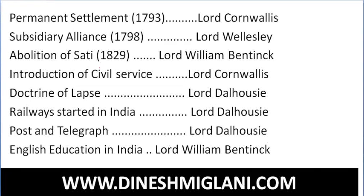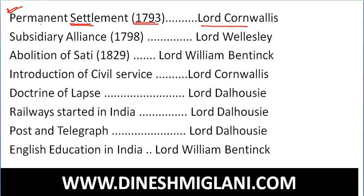We are directly talking about the different types of schemes introduced by different Governor Generals and Viceroys. The first one is Permanent Settlement, introduced in 1793 by Lord Cornwallis. This was the first effort to permanently fix land ownership in India — determining who is the owner of the land and making them responsible to pay the tax. This was first done in Bengal by Lord Cornwallis.